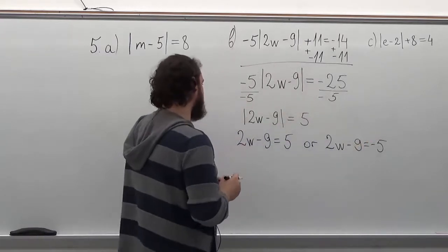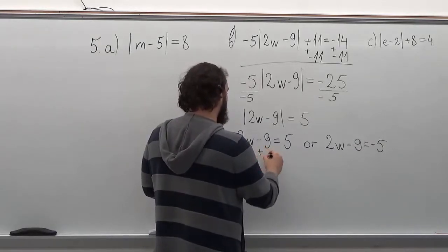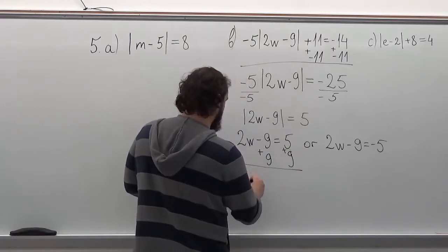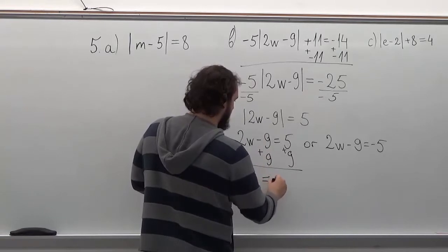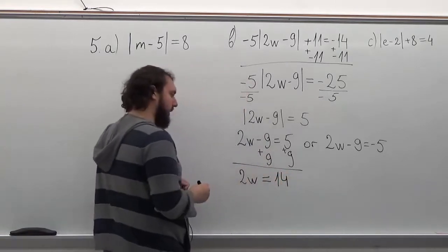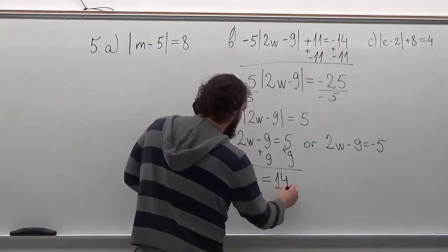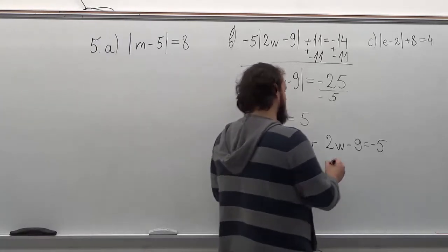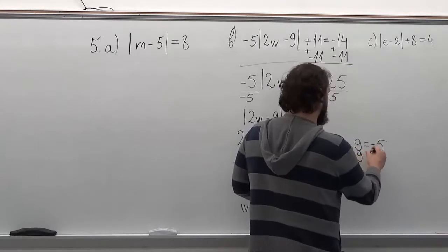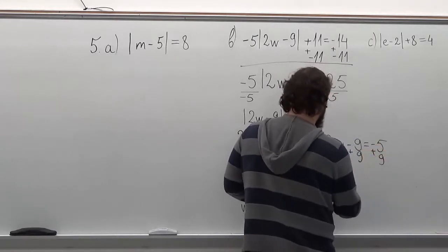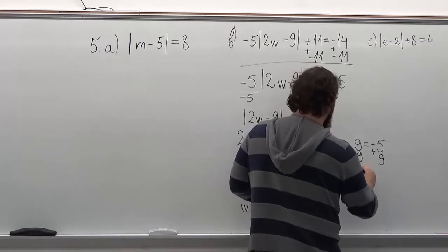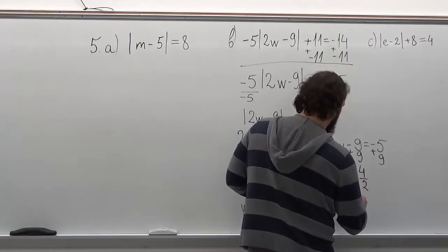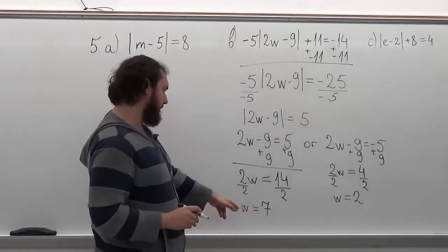So to solve this, first we must add a 9 to both sides. We get 2w equals 14. And then we divide both sides by 2. In this part, we do the same — first we add a 9 to both sides, and then we divide both sides by 2. So we get answers of 7 and 2.